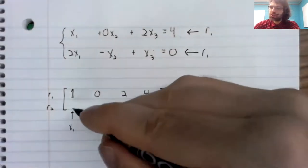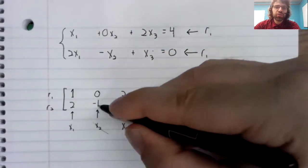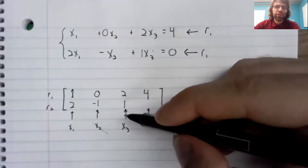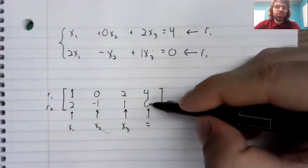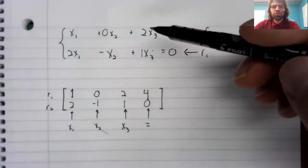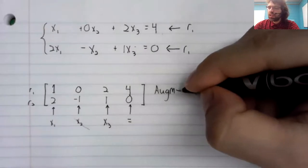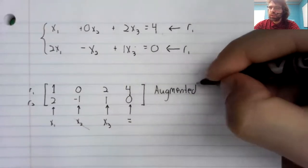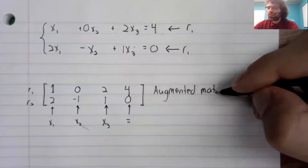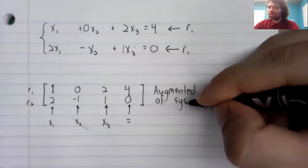Two x1, negative one x2, one x3 equals zero. And this matrix stores this system and gets its own name. It's called the augmented matrix of the system.